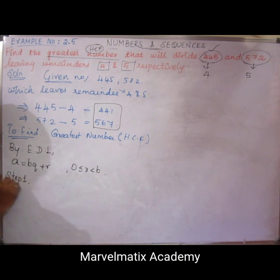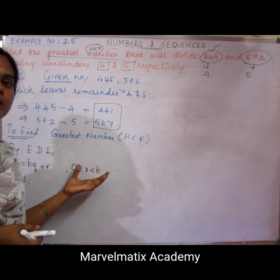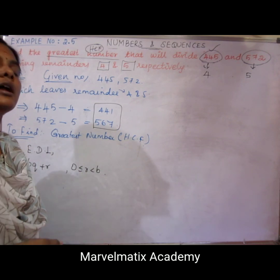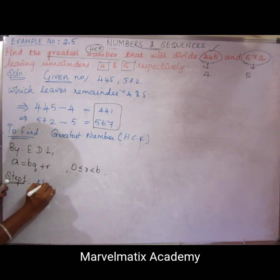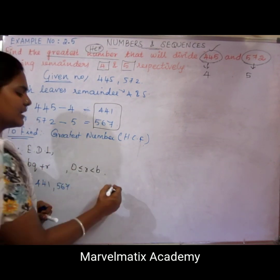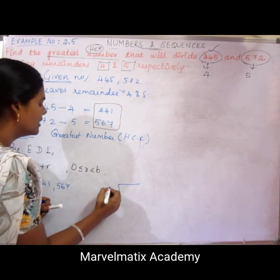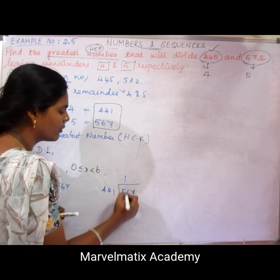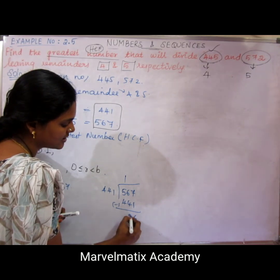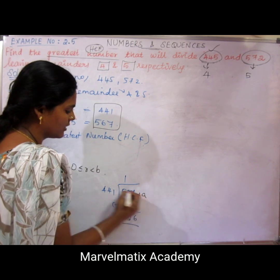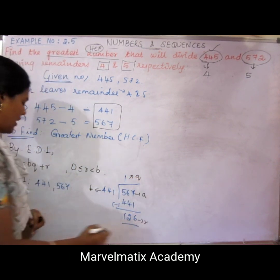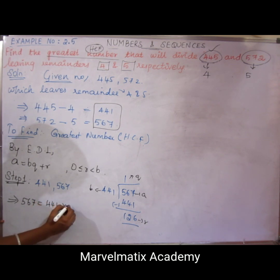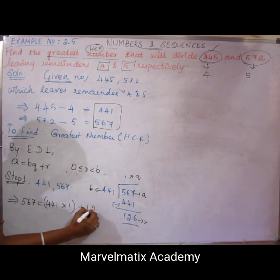Step 1: We divide the larger number 567 by 441. As per Euclid division, a = 567, b = 441, q = 1, r = 126. So 567 = 441 × 1 + 126. Now B = 441, R = 126.